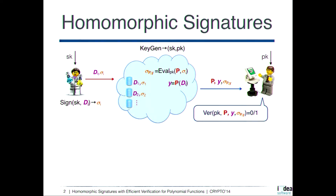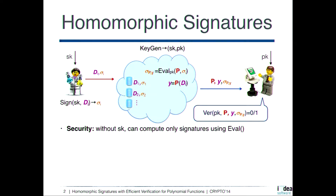Finally, Bob, by using Alice's public key, can check that Y is the correct output obtained by computing P over data signed by Alice. Intuitively, the security property of amorphous signatures says that if you don't have the secret key, the only thing you can do to compute signatures is to use the evaluation algorithm and nothing more.